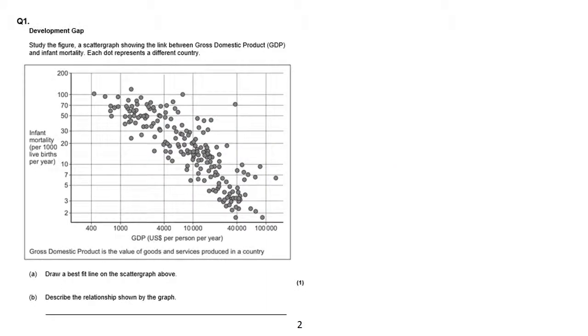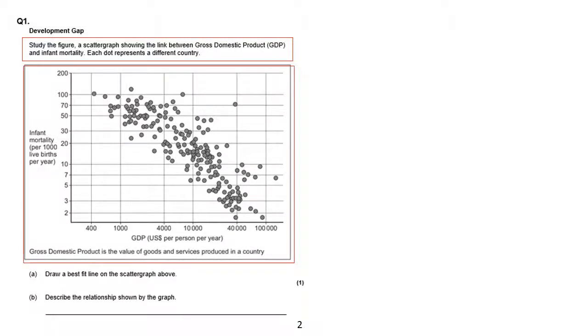So here we go, question number 1. With all of these it's important to read anything above a figure as well as the figure itself. Study the figure, a scatter graph showing the link between gross domestic product GDP and infant mortality. If we look at the graph quickly, the y-axis is infant mortality and the x-axis is GDP. If you weren't sure what that means, it gives you a massive clue in brackets - US dollars per person. You guys will study GNI now, but you could well get a graph which actually does show GDP on it.